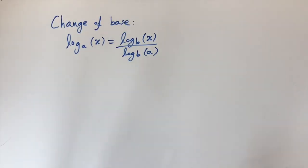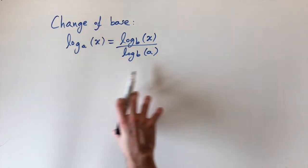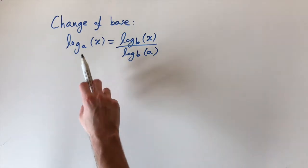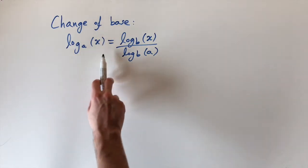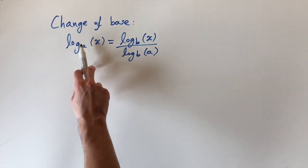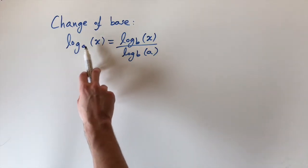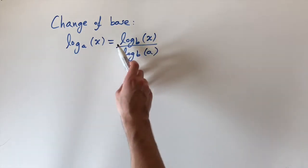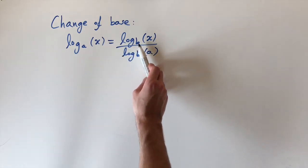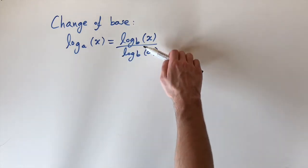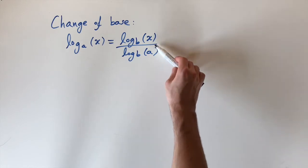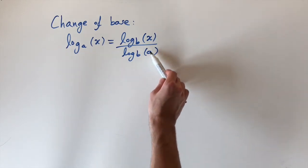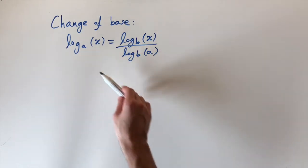In this video we're going to be proving the change of base formula for logarithms. If we have a logarithm to a base of a, applied to a number x, then we can express it in terms of a new base b, by taking the ratio of two logarithms — the top logarithm applied to x, and the bottom one applied to a, which is the old base.